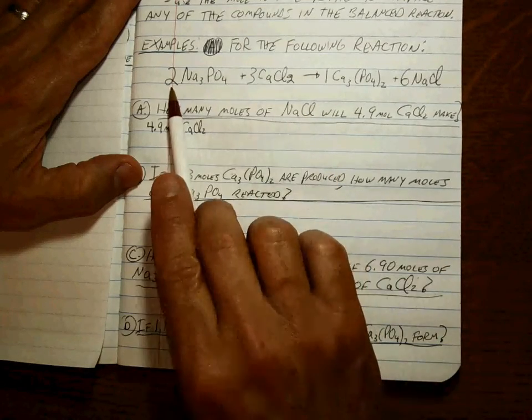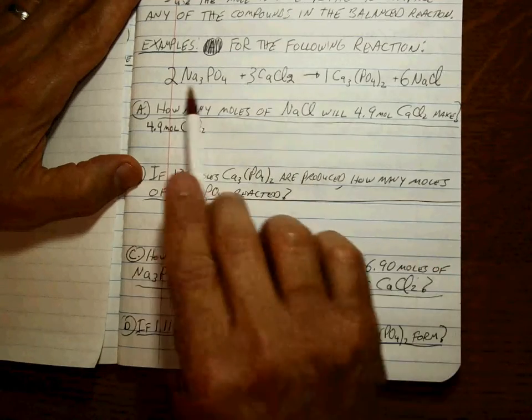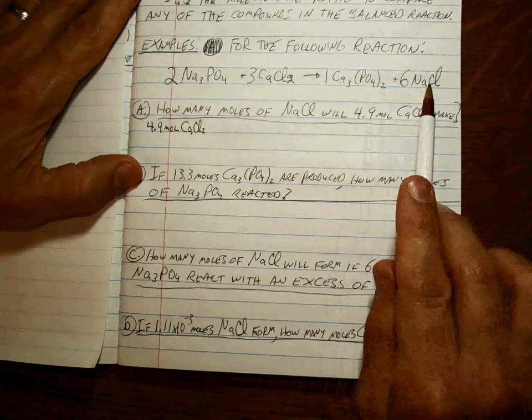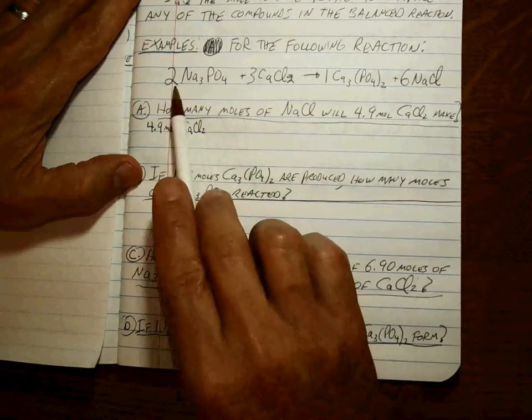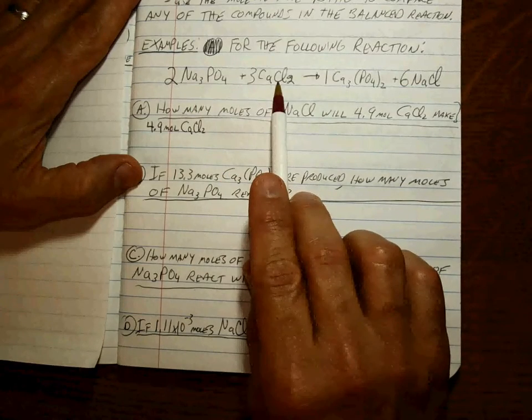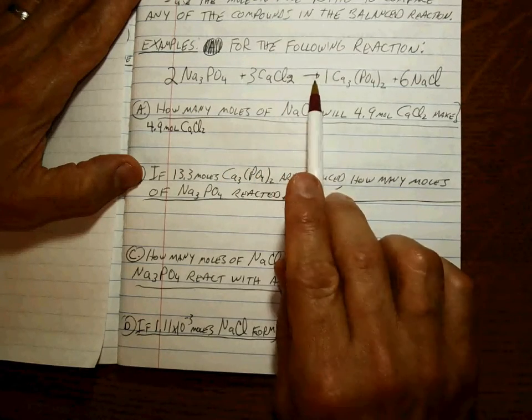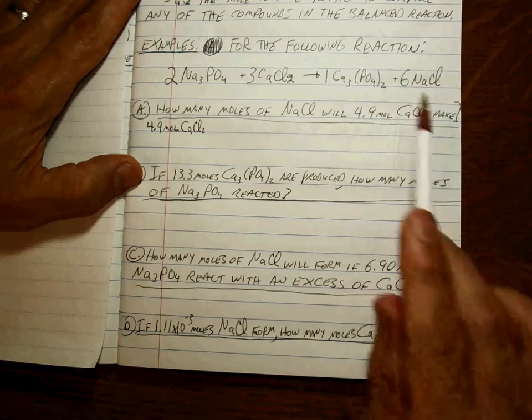So what's the ratio? We're at moles. These coefficients say literally—and I want you, when you see a balanced reaction, say to yourself: two moles of this stuff plus three moles of this stuff react to form one mole of this and six moles of that.